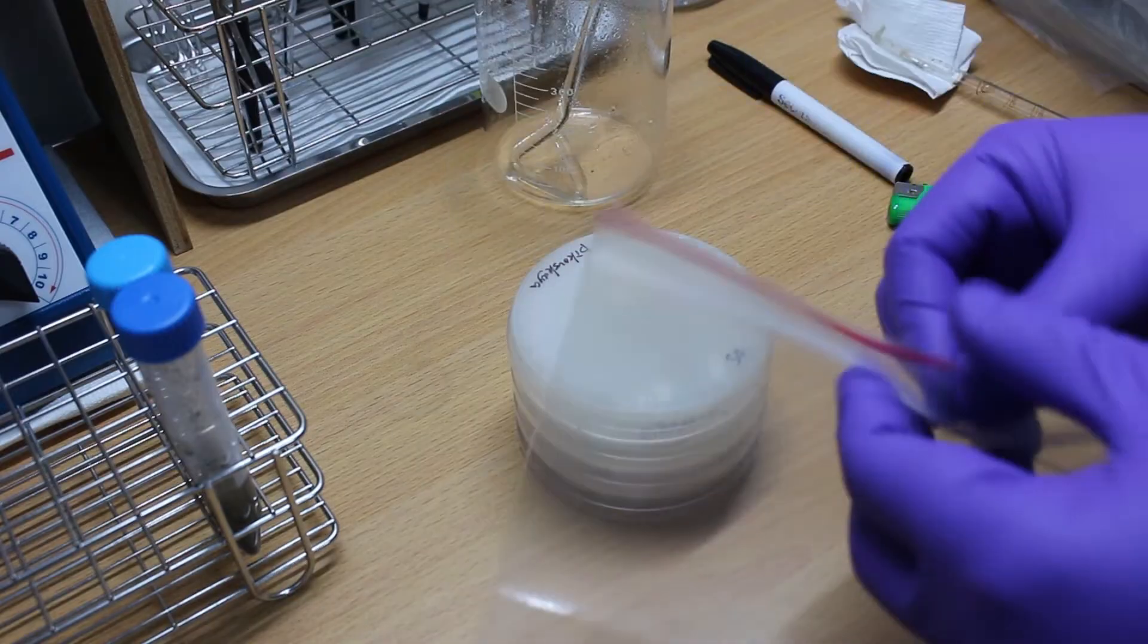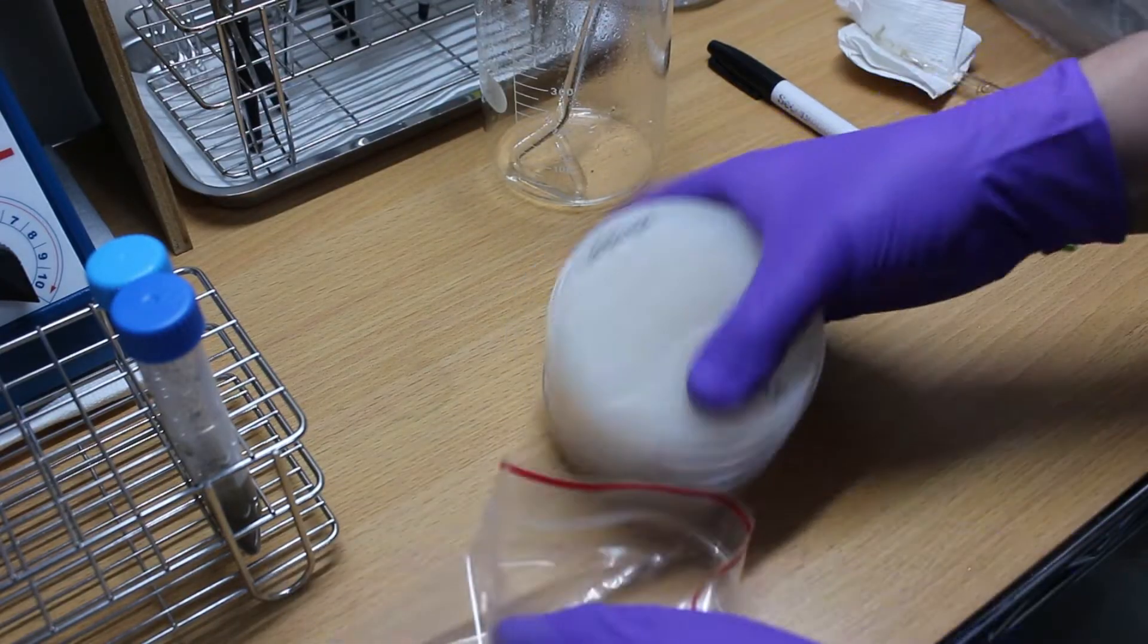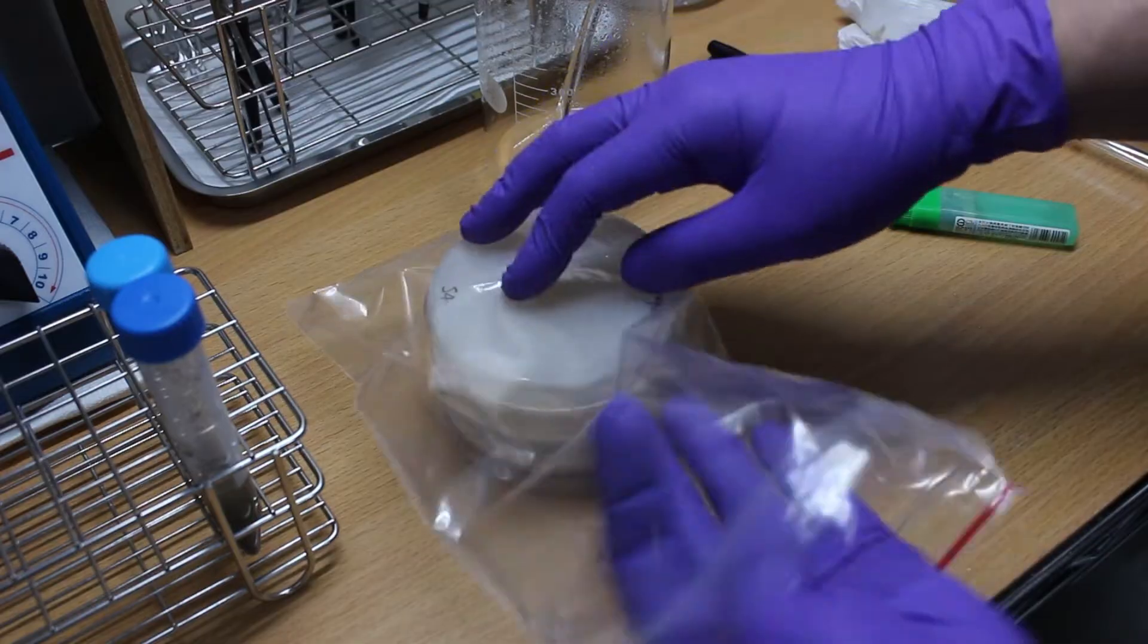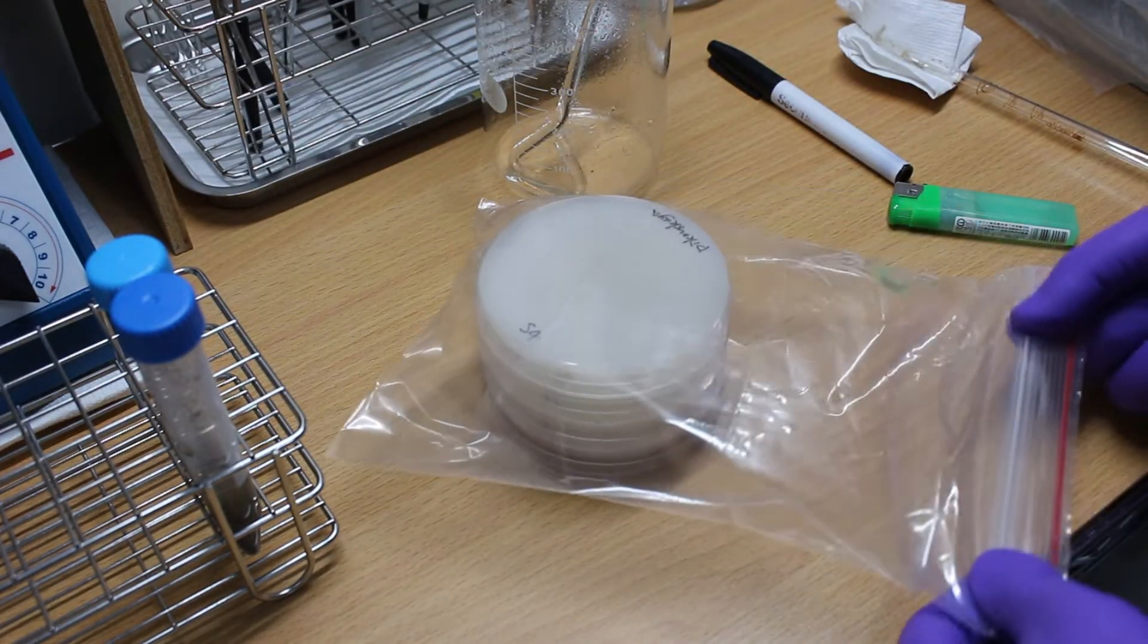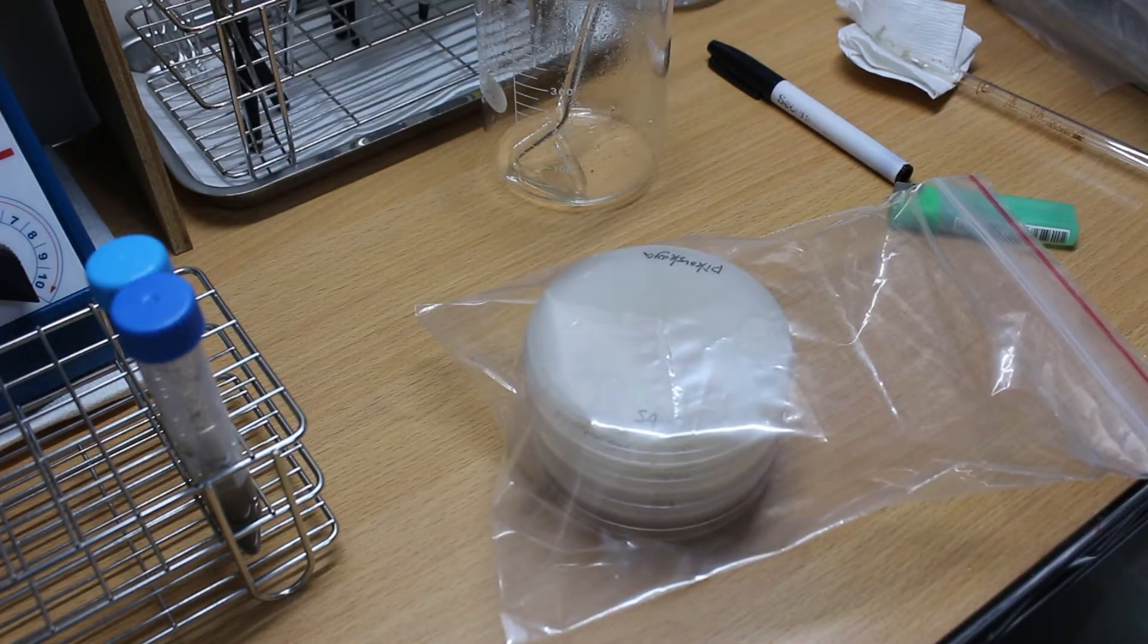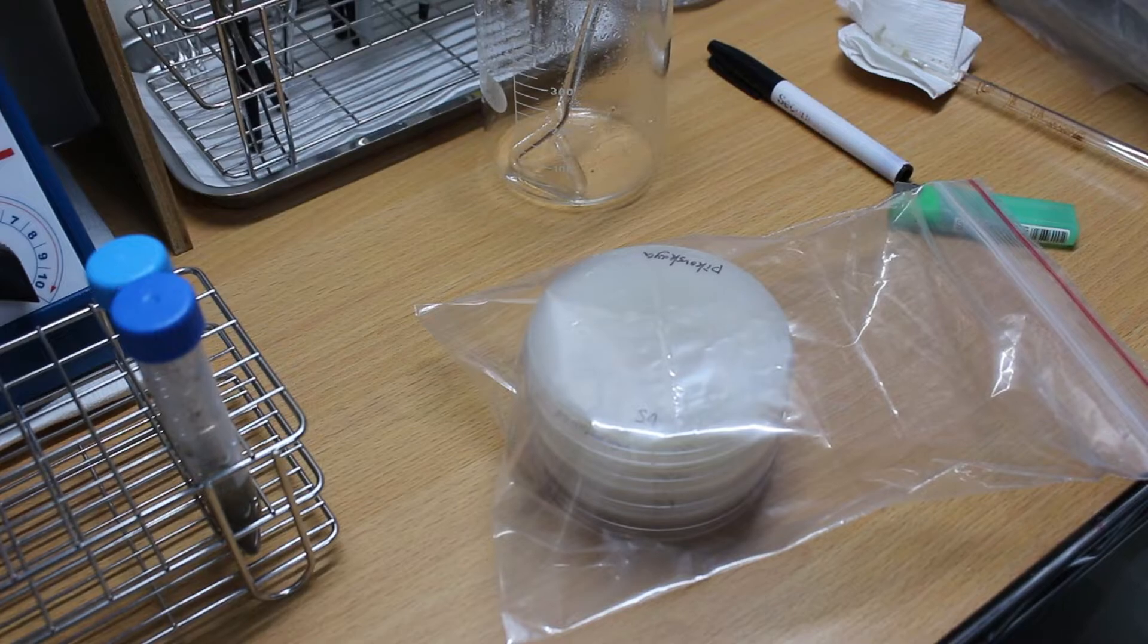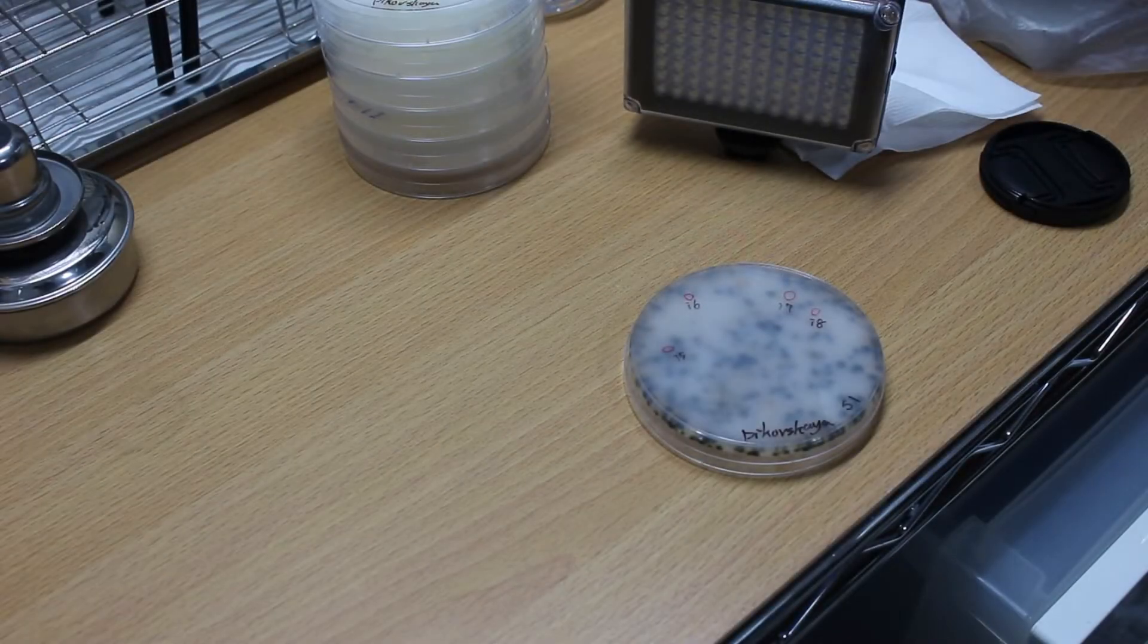After spreading the sample, flip the plate over and put it in a bag. I didn't need an incubator because I want to find bacteria that can grow at room temperature. It will normally take 2 to 3 days for the bacteria to grow.